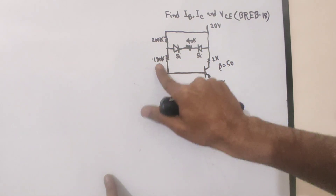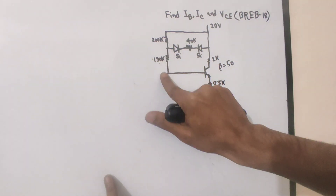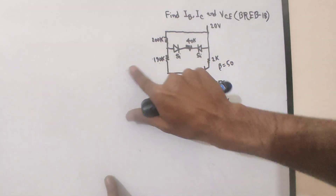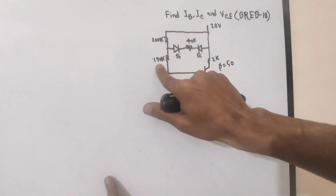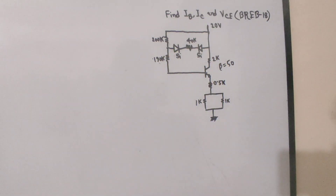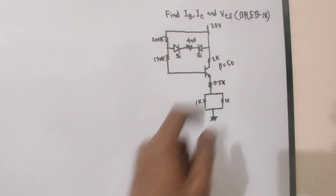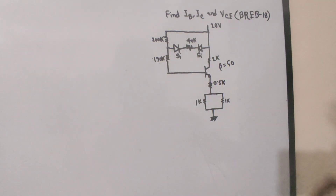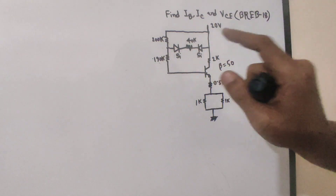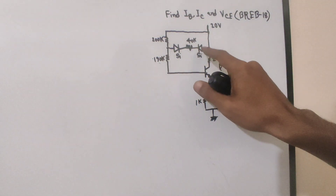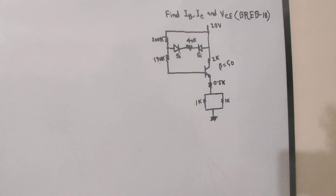Once we remove the capacitors, the circuit simplifies. Now for the active branch, the transistor has a diode mixing — the diode is forward biased and connected in this configuration.